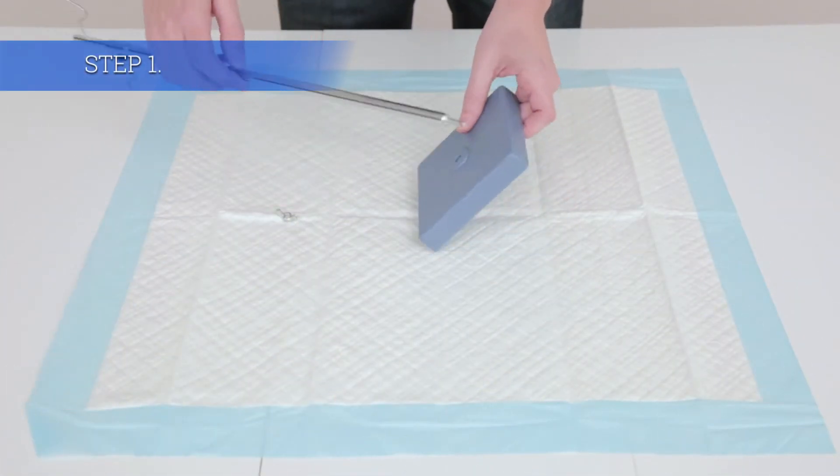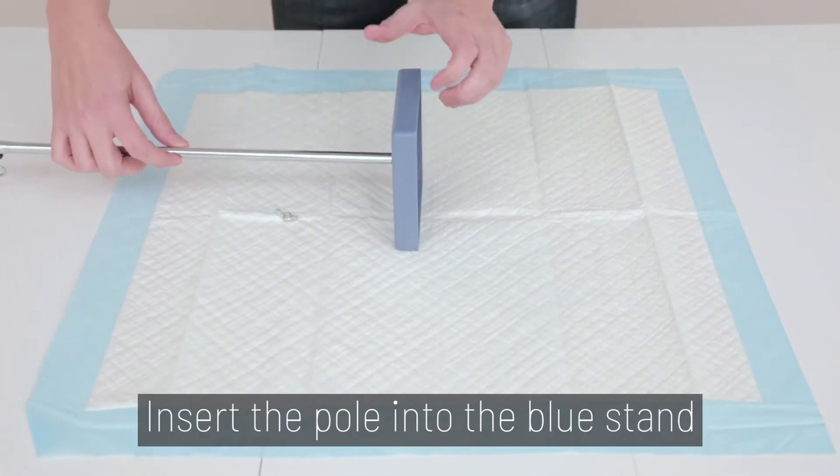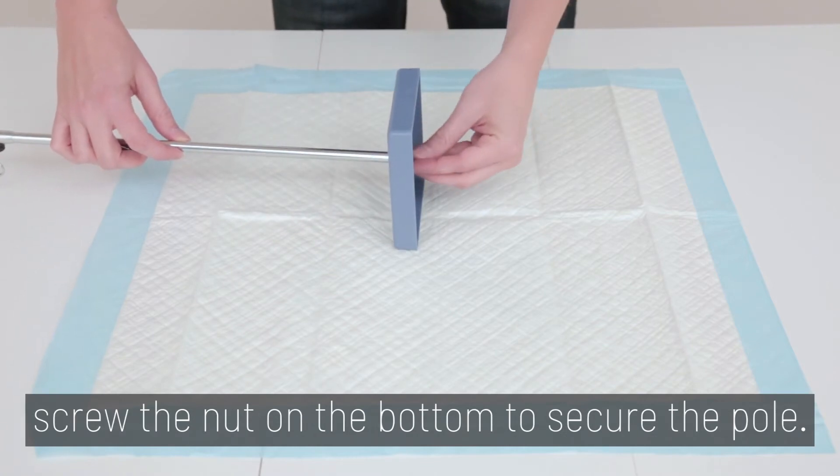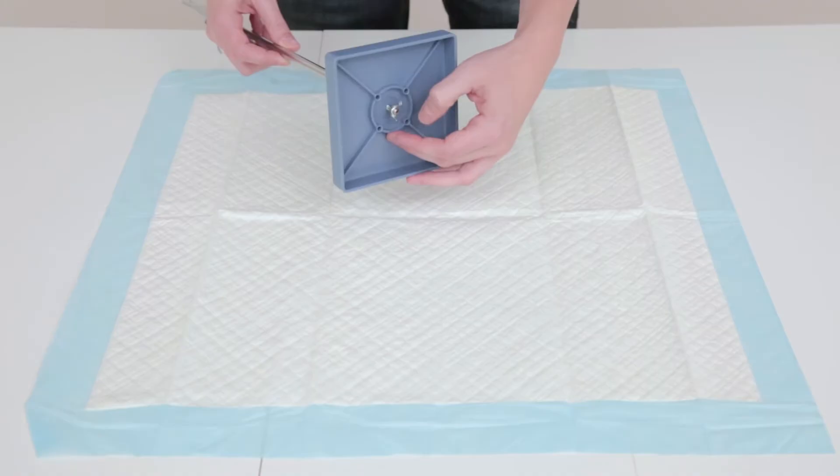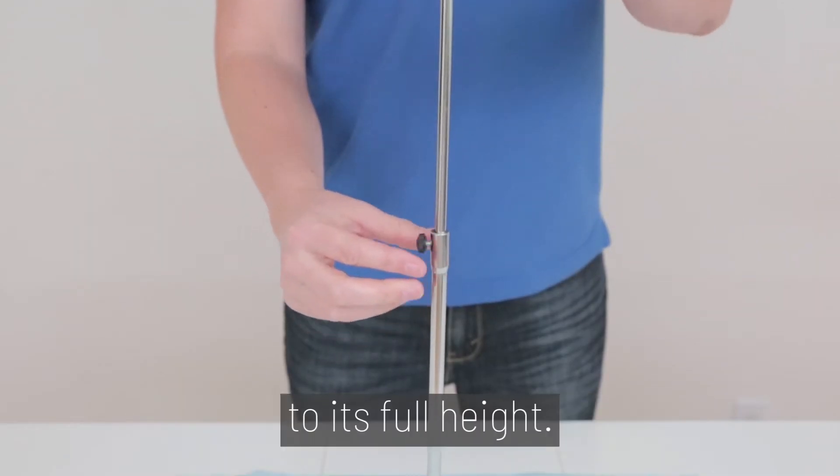Let's dive in. Step 1. Insert the pole into the blue stand. Screw the nut on the bottom to secure the pole. Make sure the pole is extended to its full height.